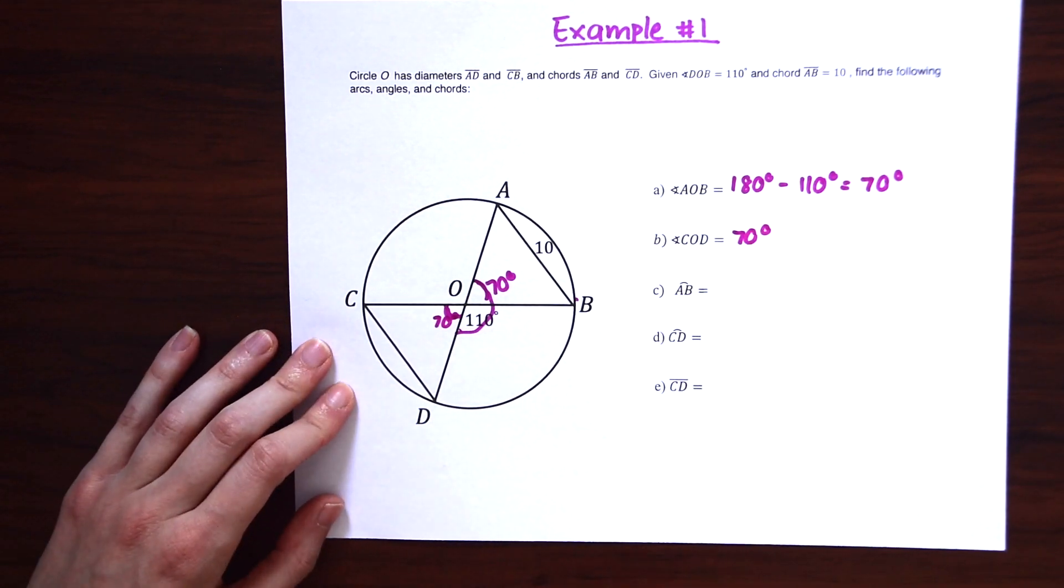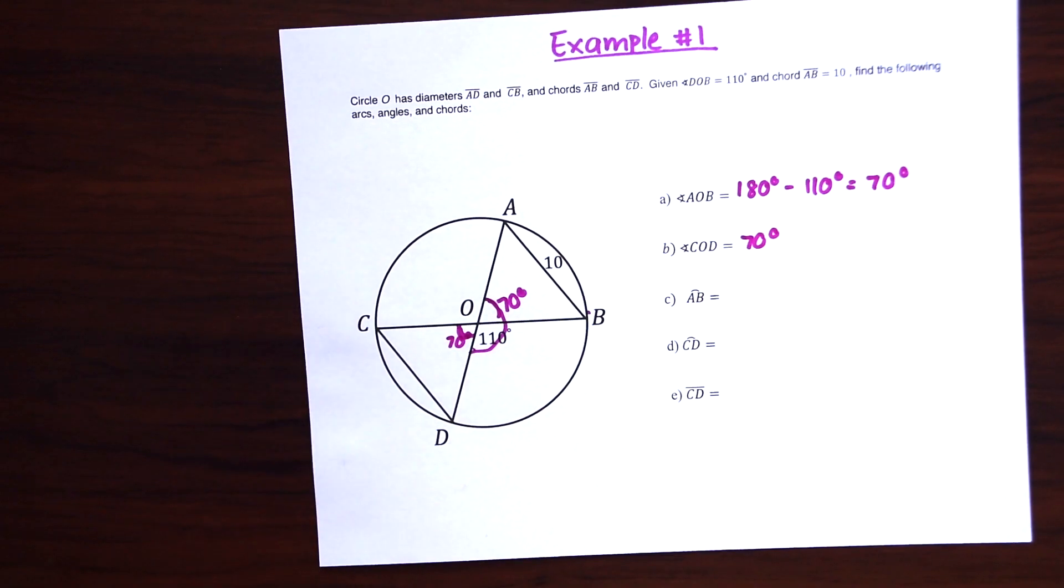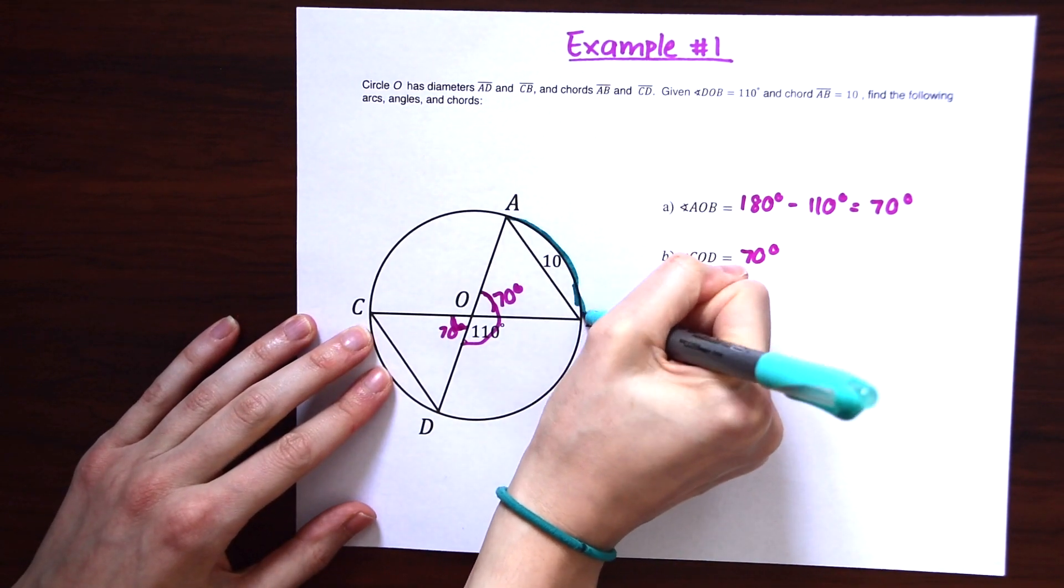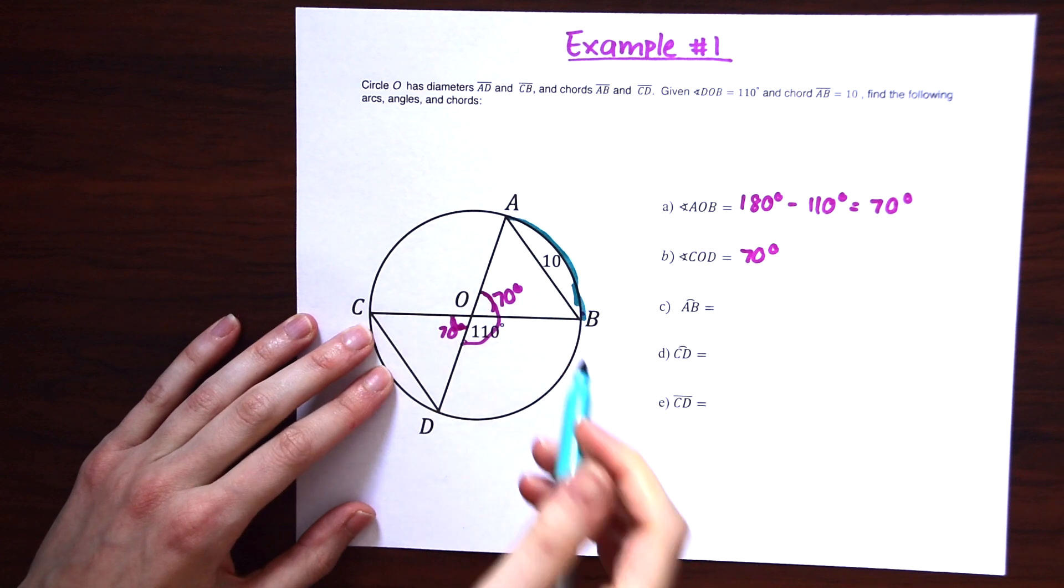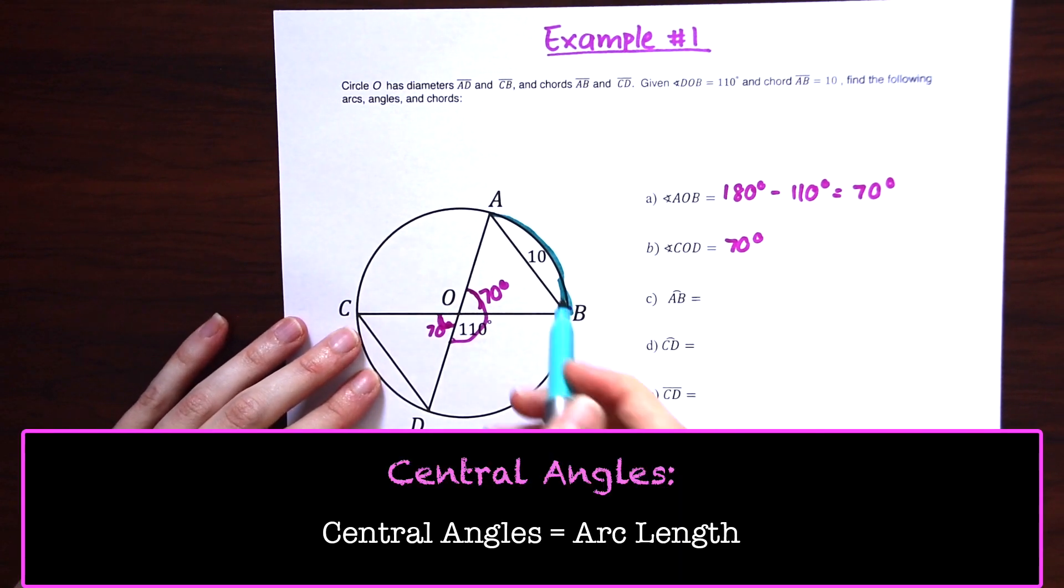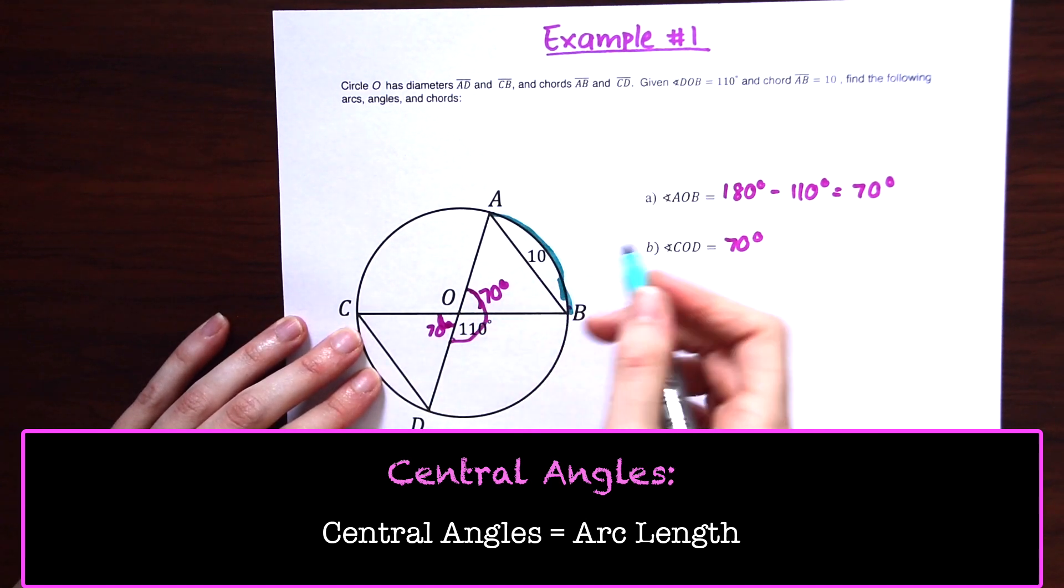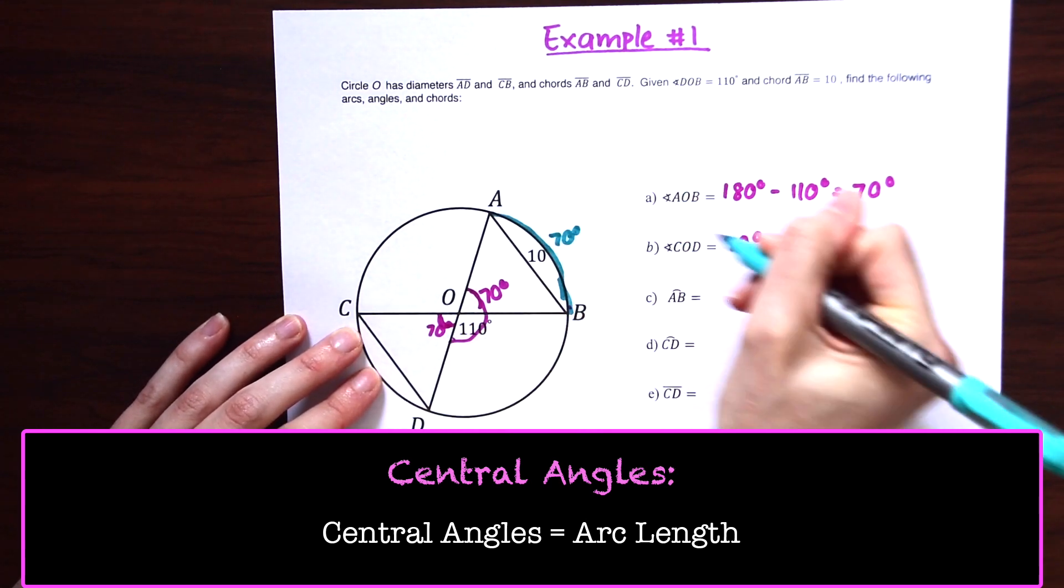Next, we're going to start looking at arcs. So arc AB. So we're looking at the value of this right here, arc AB. So central angles, that first thing we went over is that central angles are equal to the arc length. So if we have 70 degrees here, we know that we're going to have 70 degrees out here as well.